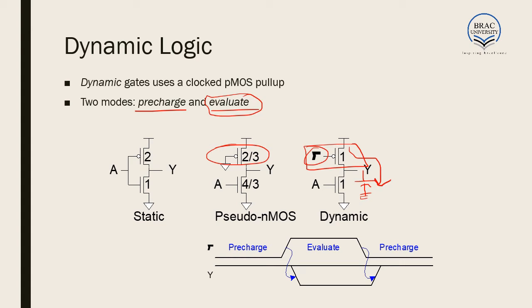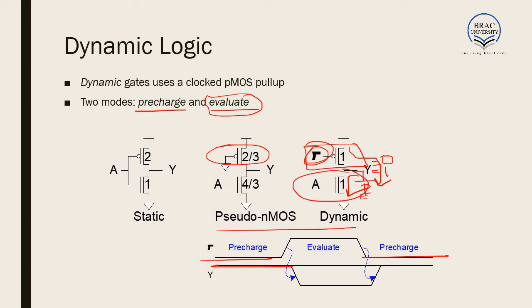When the clock becomes equal to one, the capacitor remains charged and output Y is equal to one. And when input A is equal to one, this capacitor gets discharged and Y gradually falls to zero. So in pre-charge, the output will be one irrespective of the input. In evaluate mode, if the input is one — since this is an inverter gate — the output would be zero and there will be a delay involved. The delay is created by the time taken by the capacitor to discharge.